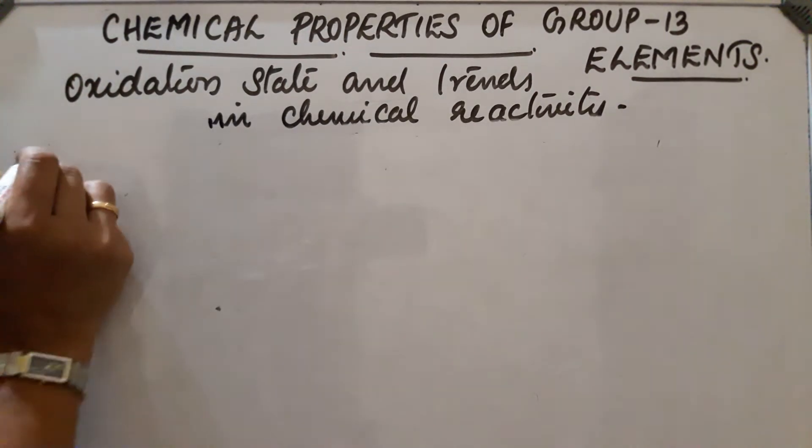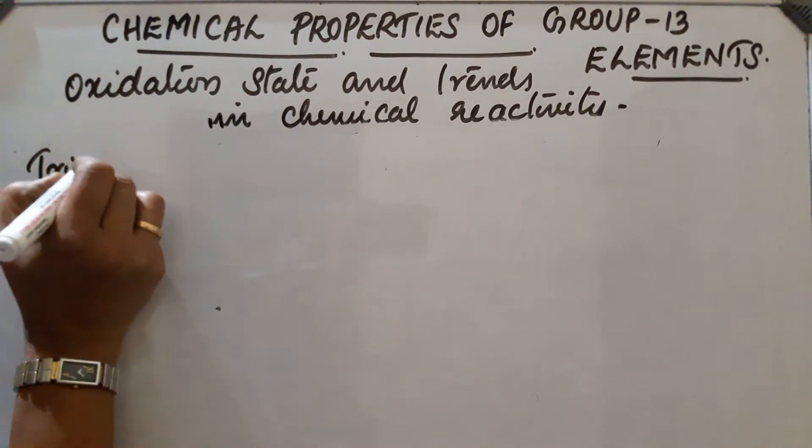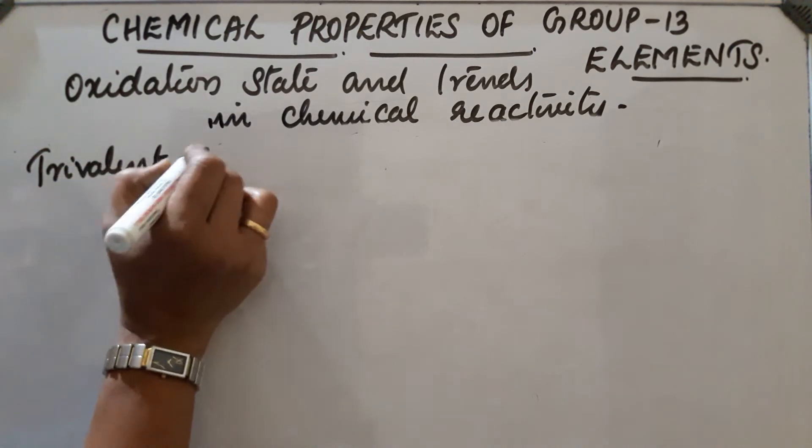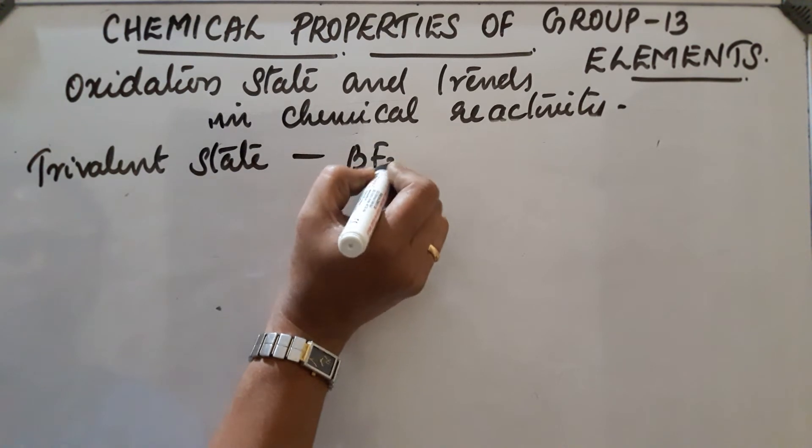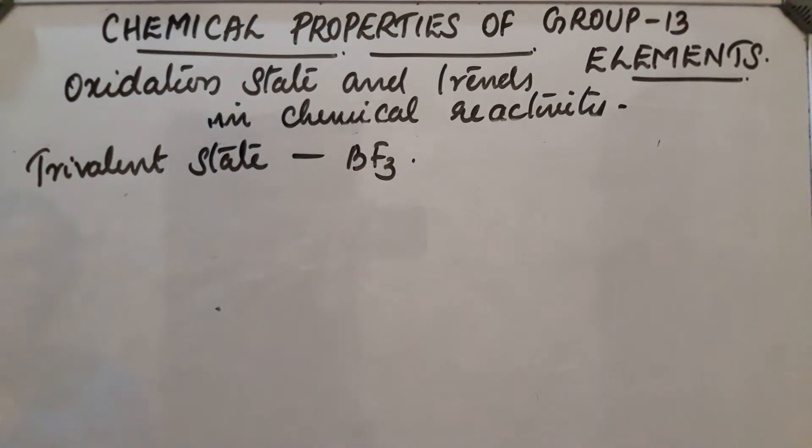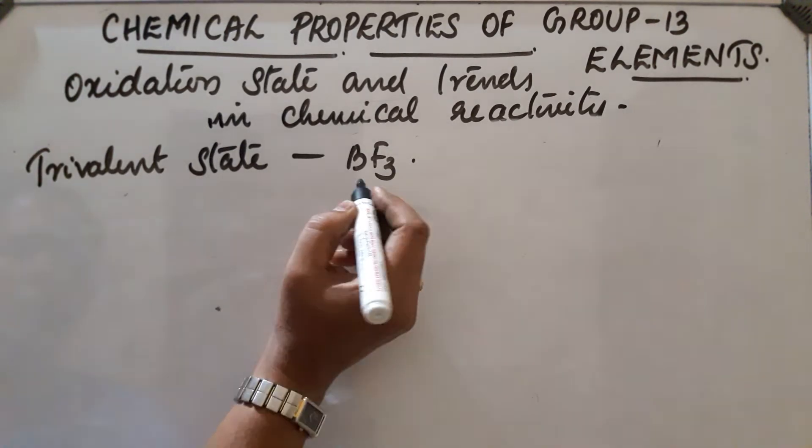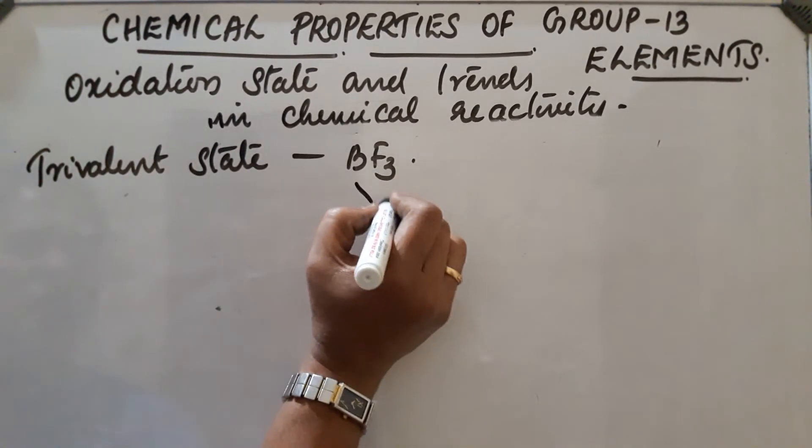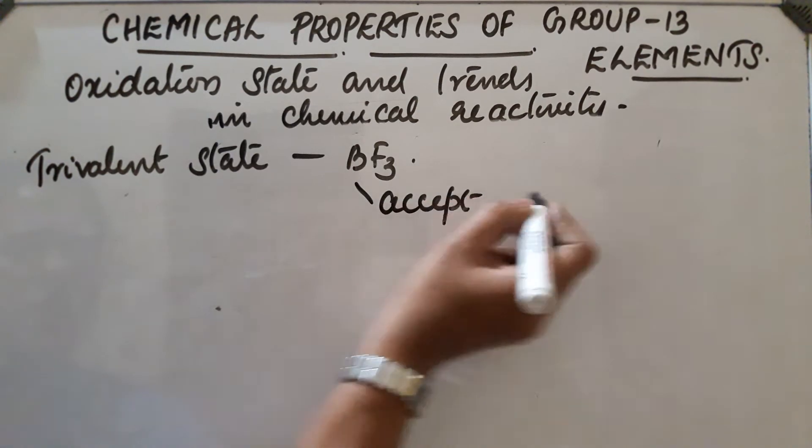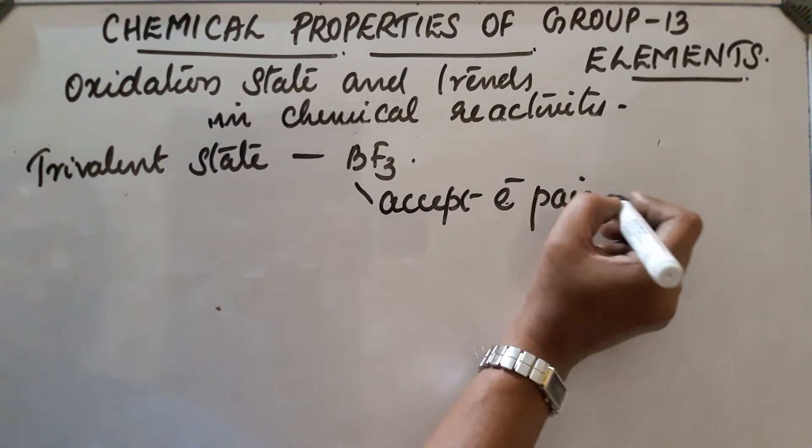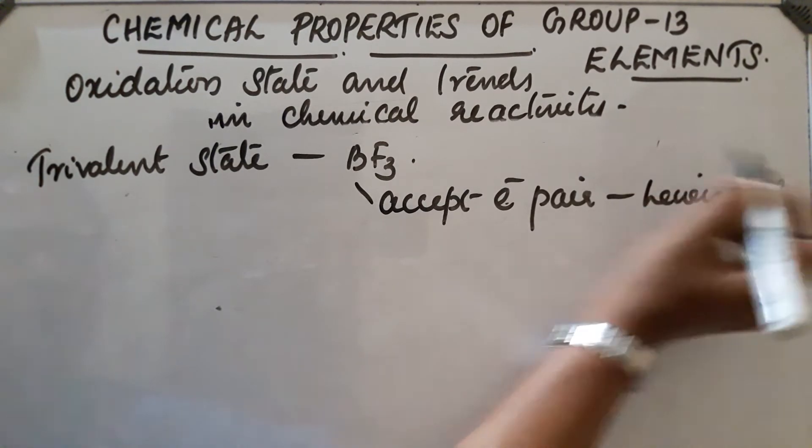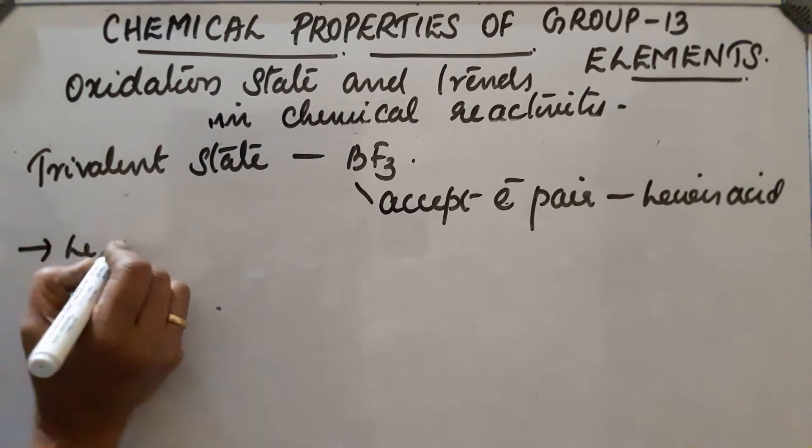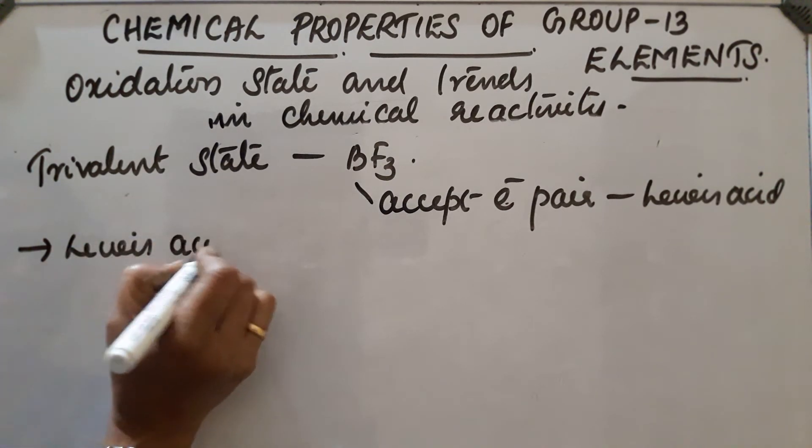Next, in trivalent state, compounds like BF₃ - here the central atom boron is electron deficient with only six electrons in its valence shell. Boron has the tendency to accept electron pairs, so it acts as a Lewis acid, and this Lewis acid character decreases down as the size increases.